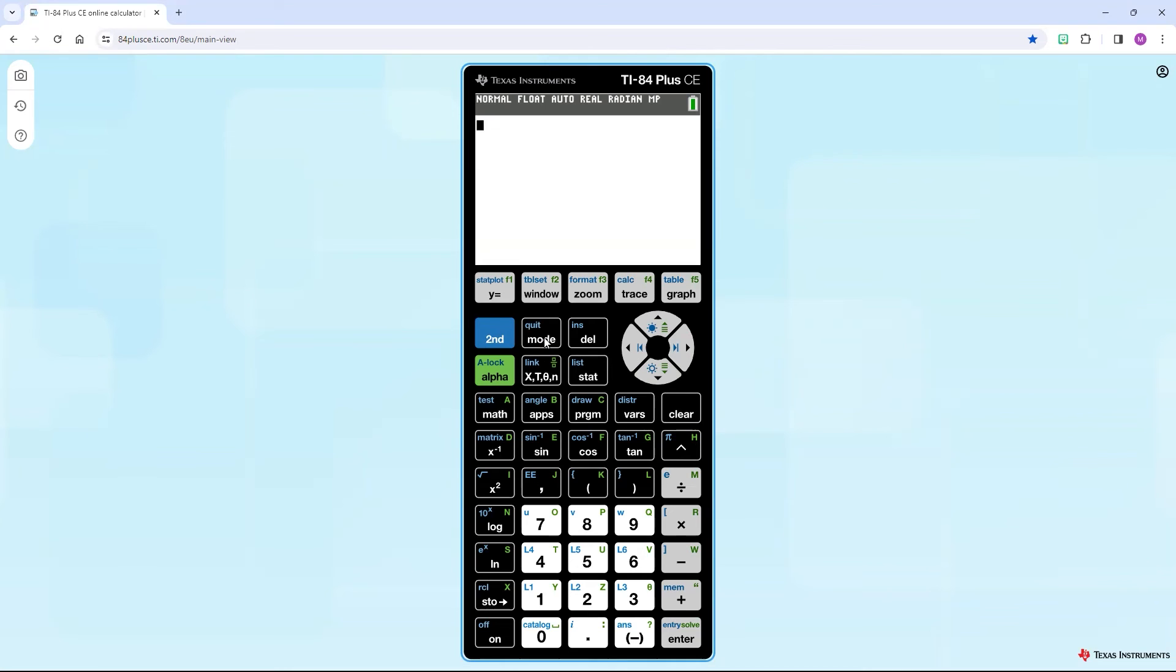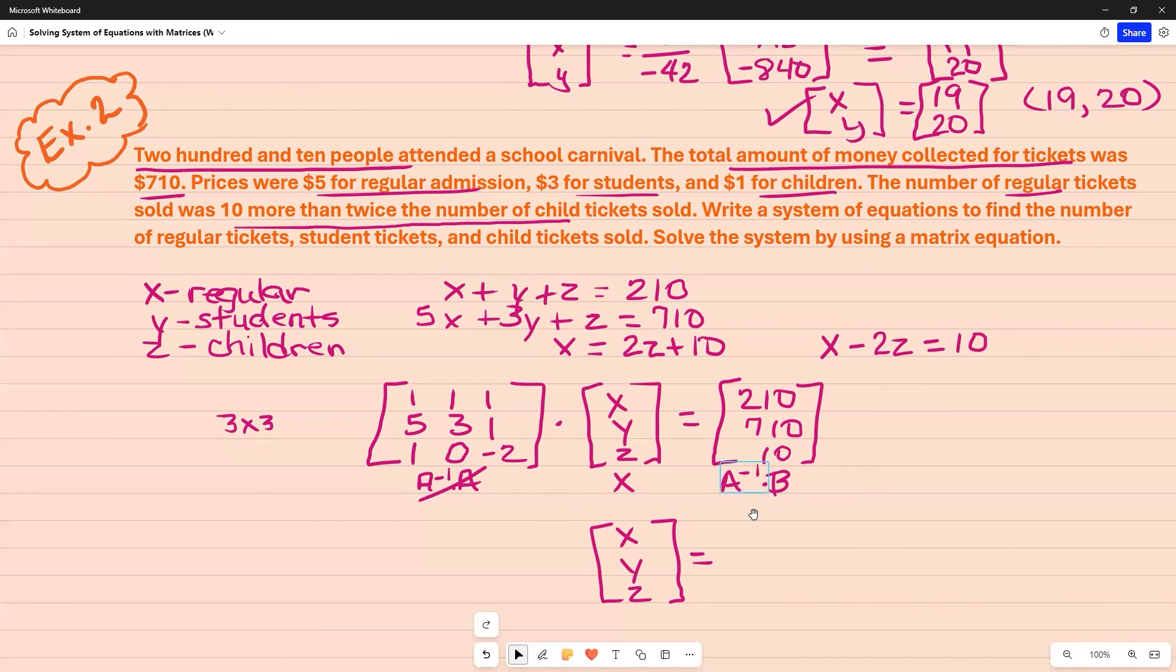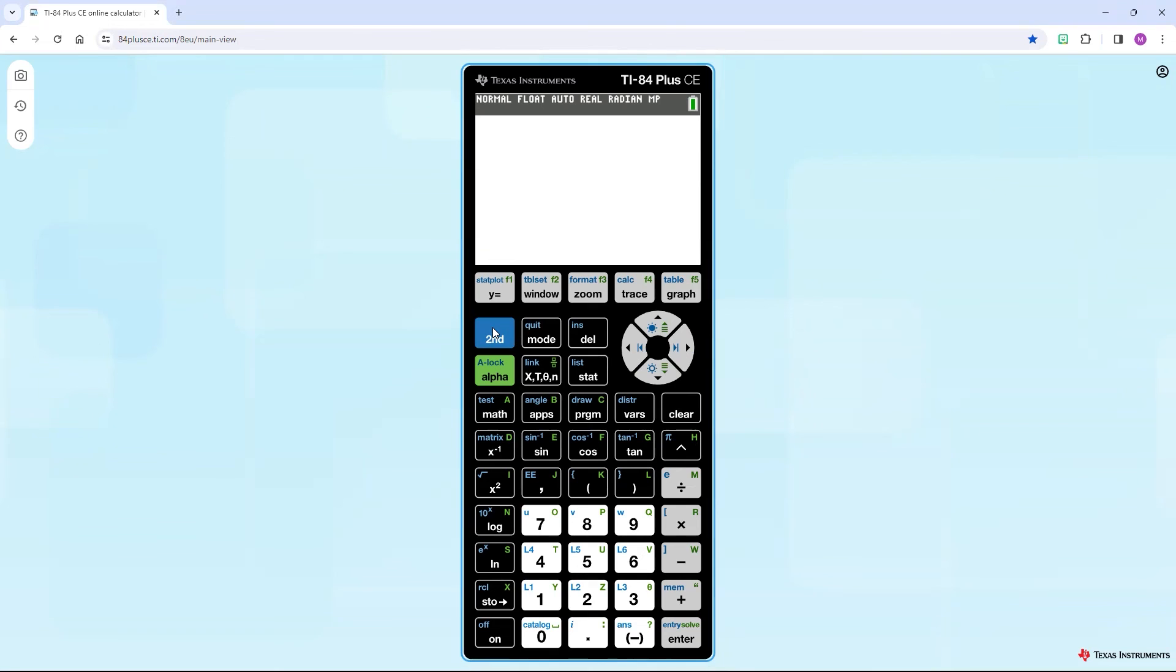And now what we're going to do is we're going to take our A inverse and we're going to multiply times B. Go back and select A, which is second matrix. Hit enter. And now hit your X inverse, multiplication sign, and go back to second matrix and select B, enter. And you want to hit enter one more time. And that's going to give you your answer.